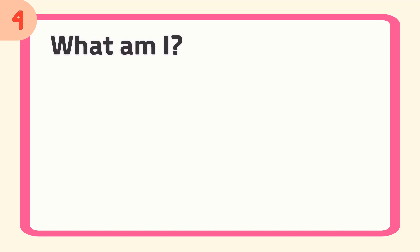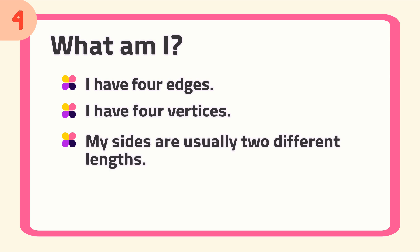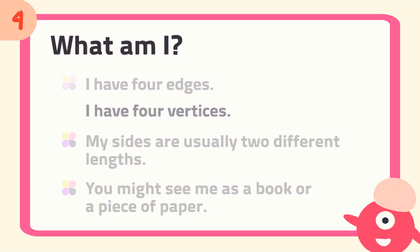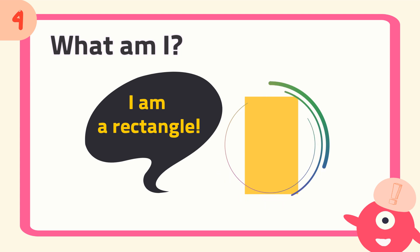Number four, what am I? I have four edges, I have four vertices. My sides are usually two different lengths. You might see me as a book or a piece of paper. The answer is, I am a rectangle.